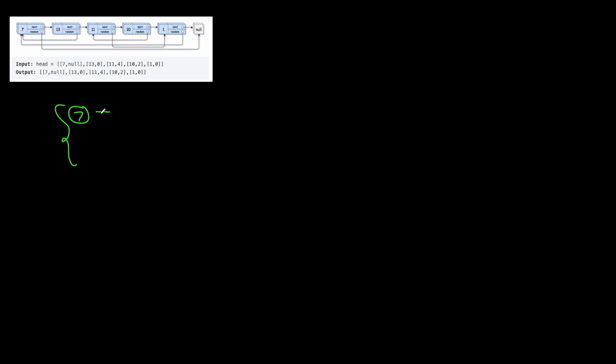We're going to iterate from left to right on our linked list and process each node. We're going to start with node seven here and say: have we cloned this node already? No, we haven't — we just started. So we're going to put the old seven as the key — I'll use a circle to denote the old one and a square to denote the copy — and we'll create a copy of it by creating a new node with the old node's value, node.val, and put it into our dictionary.